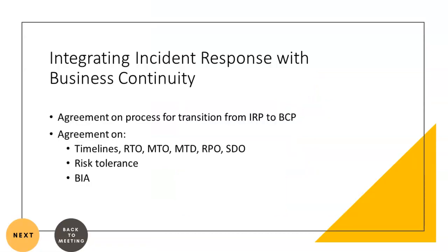The IRP has a mapping with the BCP (business continuity plan) in the form of an internal agreement on the process for transition from IRP to BCP — determining when the incident response plan is activated and when to activate the business continuity plan. This internal agreement should reference timelines such as RTO, MTO, MTD, risk tolerance levels, and business impact analysis reports to define the point of transition from IRP to BCP.